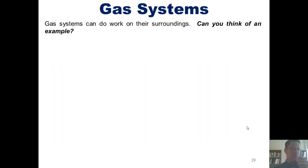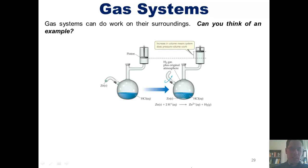Let's turn now to discussing gas systems. Gas systems, as it turns out, can do work on their surroundings. Can you think of an example? If you said the controlled explosions in a combustion engine, you were right. If you said something else, I have no way of knowing. So let's just assume you're right in any case. Here's a cool picture that shows that.